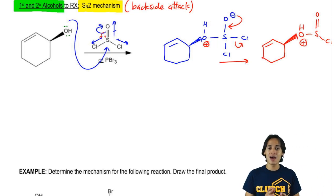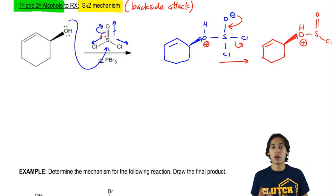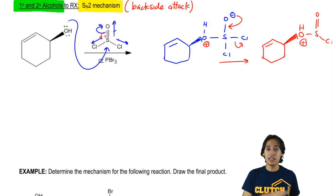It turns out that now this leaving group is awesome because that O has a direct positive charge, which means that after it leaves, it will be neutral. On top of that, the sulfur pulls electrons away. So this is an amazing leaving group.